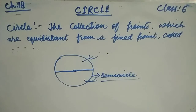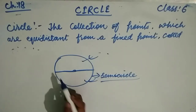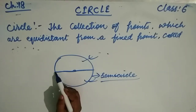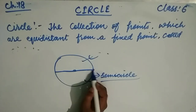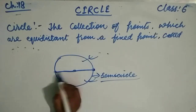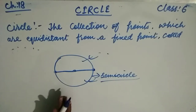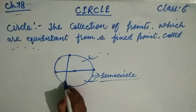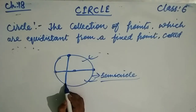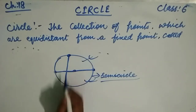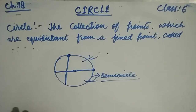The next concept is the chord of a circle. A chord is a line segment joining two distinct points of the circle. This line segment joining two distinct points on the circle is called a chord.